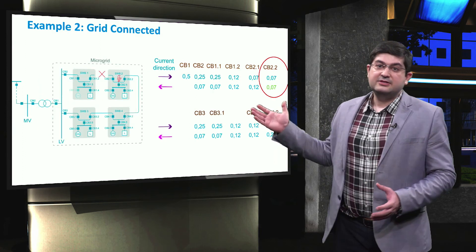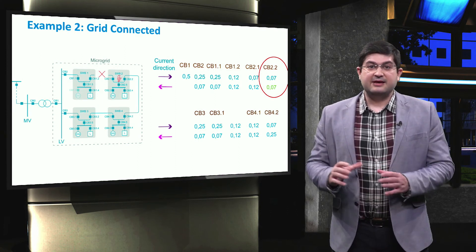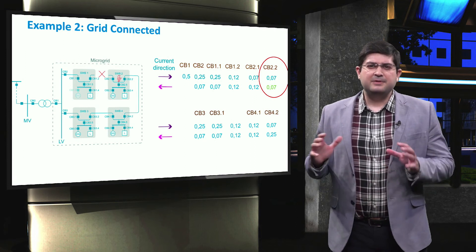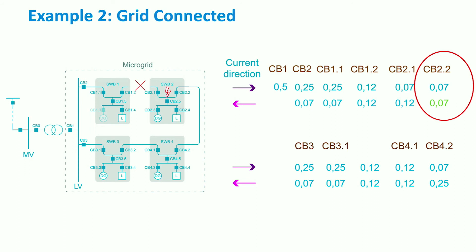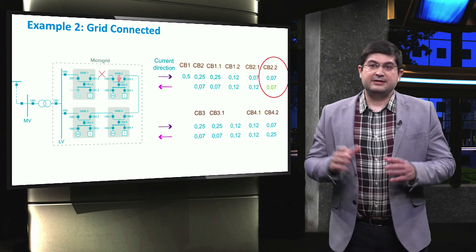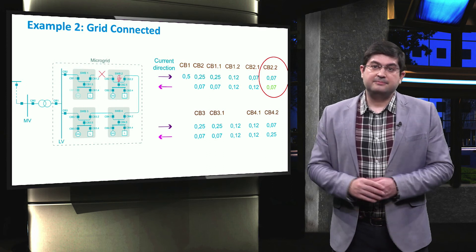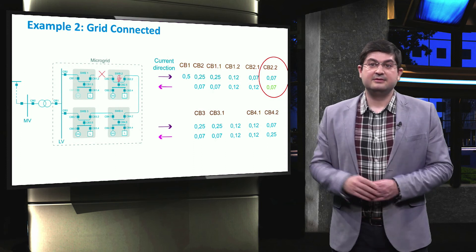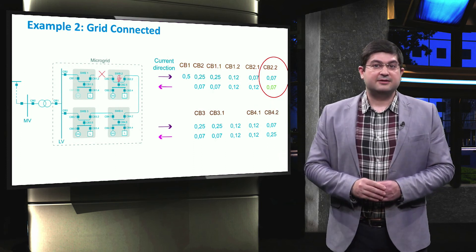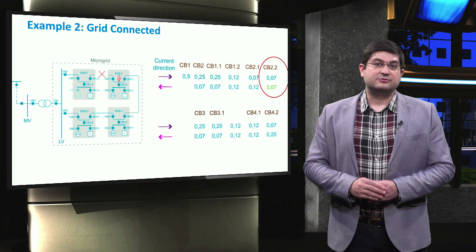To solve this selectivity issue, we employ adaptive protection. The main reason is that the configuration of the microgrid has been completely changed after the first fault. Therefore, all the relay time-current tripping settings shall be adapted to the new configuration. For this example, the time setting of circuit breaker 2.2 is changed from 0.25 to 0.07 seconds. Therefore, if circuit breaker 4.2 does not disconnect, circuit breaker 2.2 will disconnect faster than circuit breaker 4.1, avoiding the unnecessary disconnection of switchboard 4.